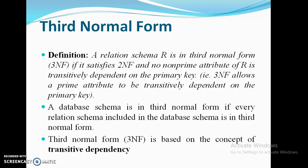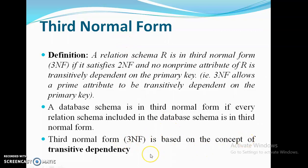So 3NF is against transitive dependency. In the third normal form, you have to remember: first it should satisfy the lower normal form, that is 2NF. It should be fully functionally dependent and you also have to check for transitive dependency. A database schema is in 3NF if every relation schema included in the database schema is in third normal form. So 3NF is based on the concept of transitive dependency, where 2NF satisfies full functional dependency.